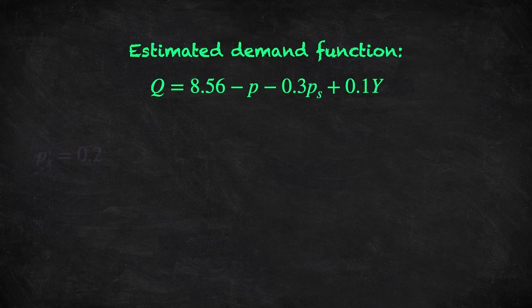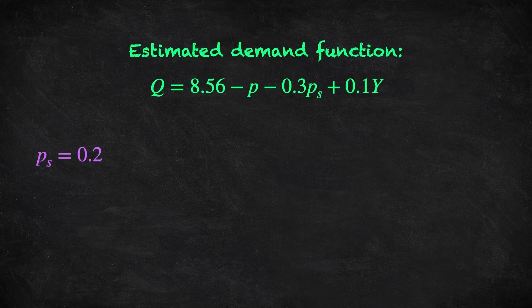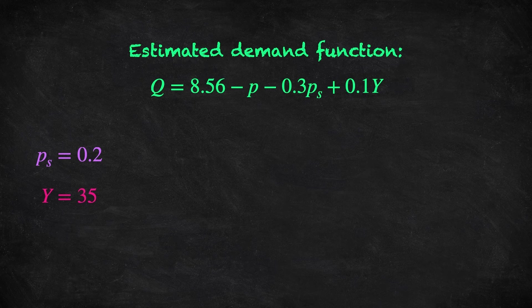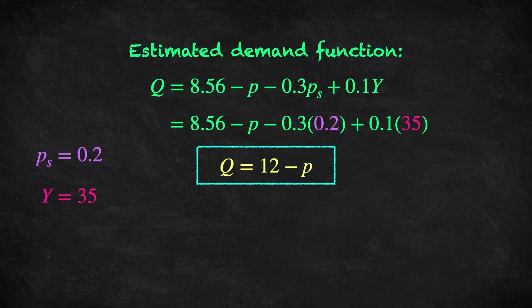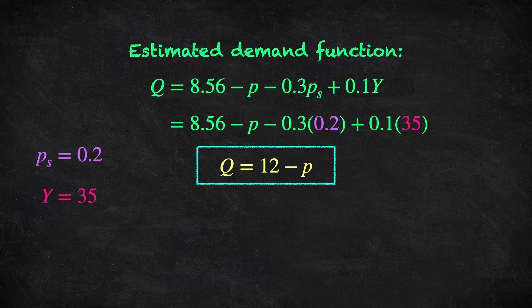So let the price of sugar equal 20 cents, 0.2 of a dollar, and let income equal 35. Then the demand function simplifies to Q equals 12 minus P, and so producing a diagram should be straightforward.